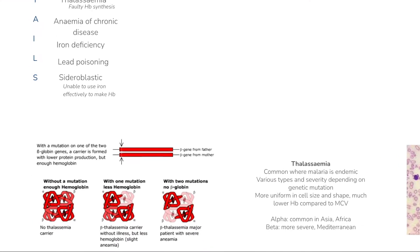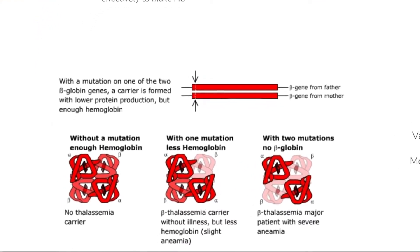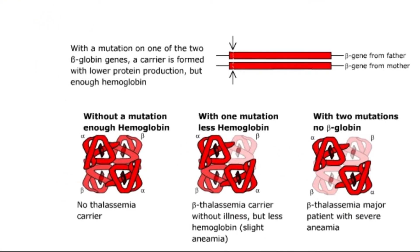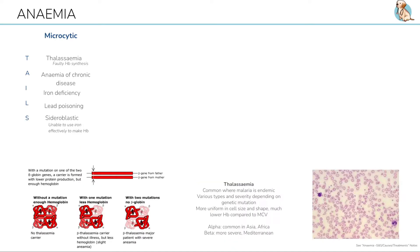Remember, red blood cells have 4 globin chains — 2 alpha, 2 beta — each with iron or haem. Thalassemia occurs when there is a mutation over the genes that form these chains, and hence the red blood cell can carry less haem and oxygen.